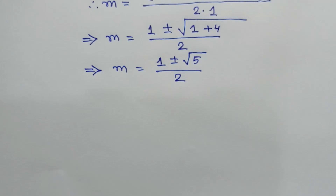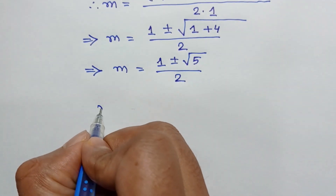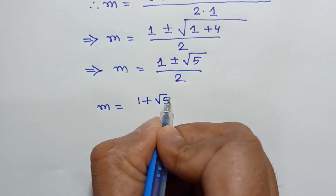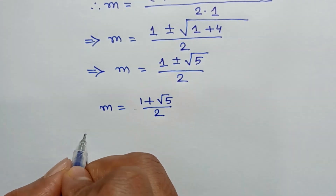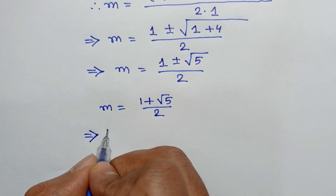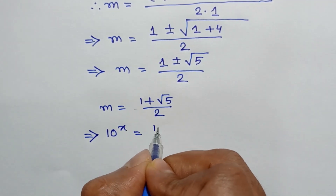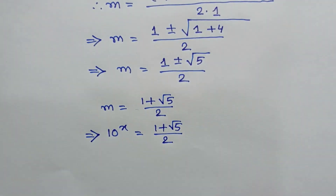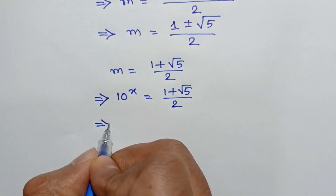Taking the positive case, we get m equal to 10 to the power x equals 1 plus square root of 5 over 2. Substituting the value of m equals 10 to the power x, we get 10 to the power x equals 1 plus square root of 5 over 2.